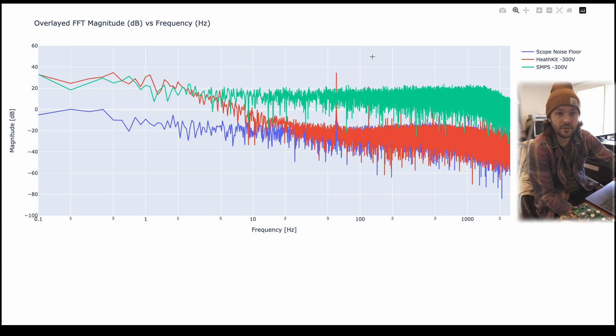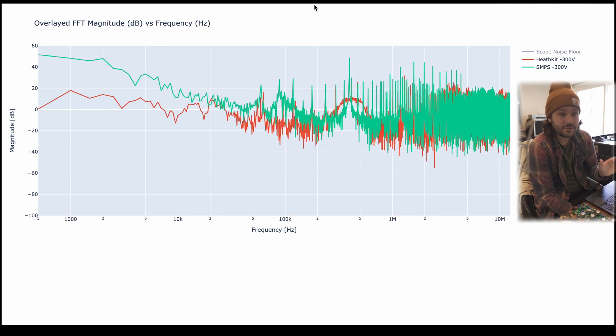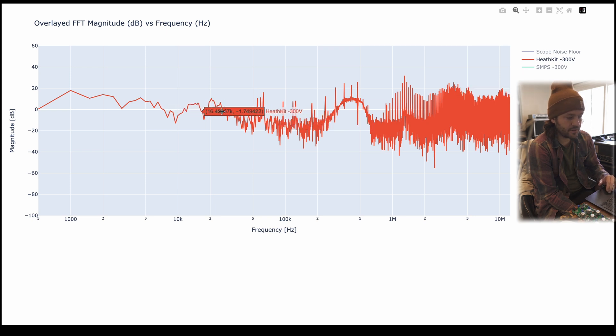If I zoom way in on my scope and we look at timescales that are way above the audio band, we can get a better idea of what the switch-mode power supply is doing. The particular circuit I'm using switches at 400kHz and we can see on this green trace that the dominant spike here is right at 395kHz. If we compare that to the Heath kit it doesn't have anything going on, right?